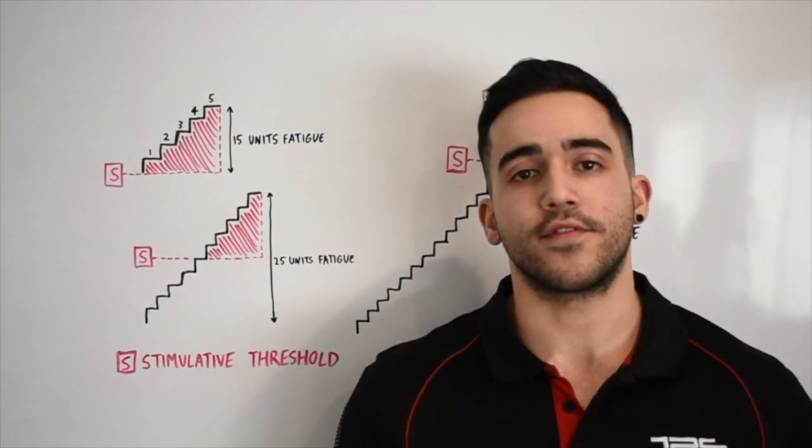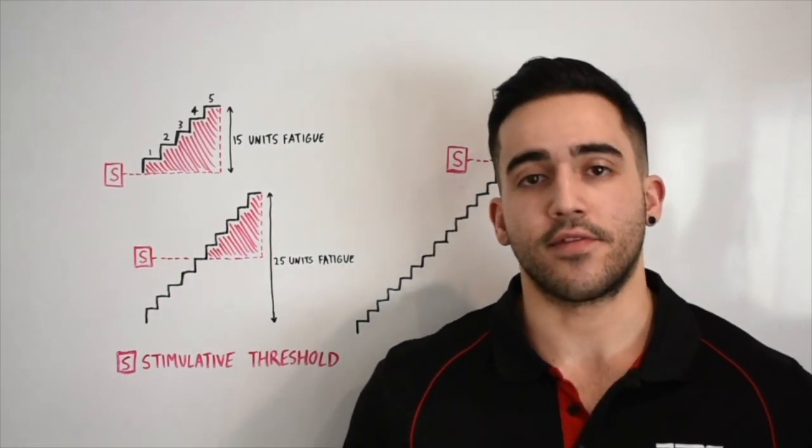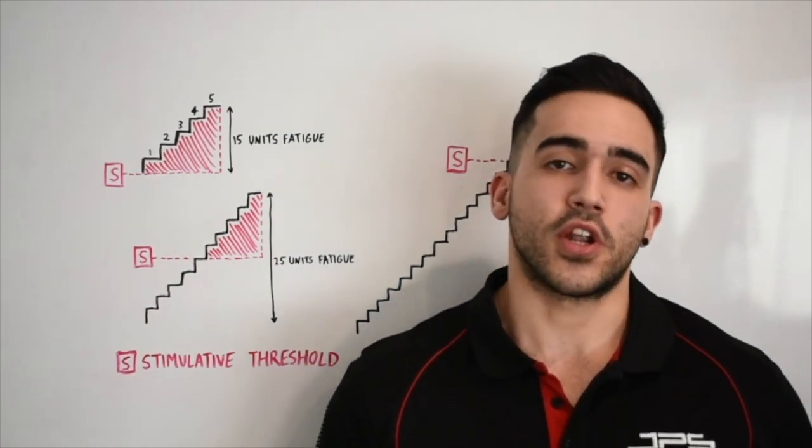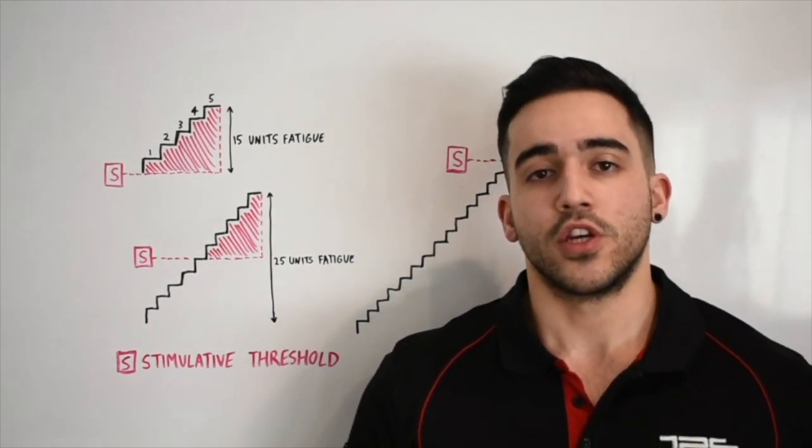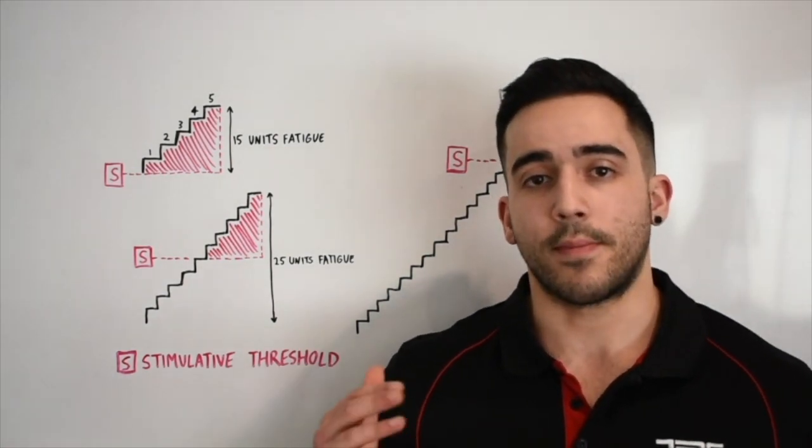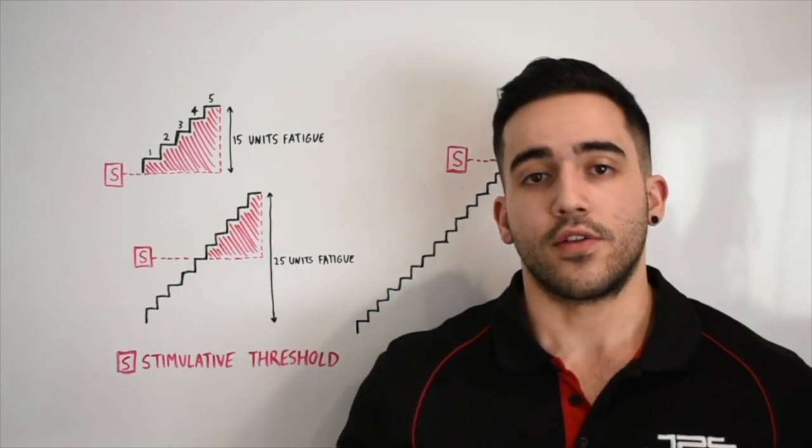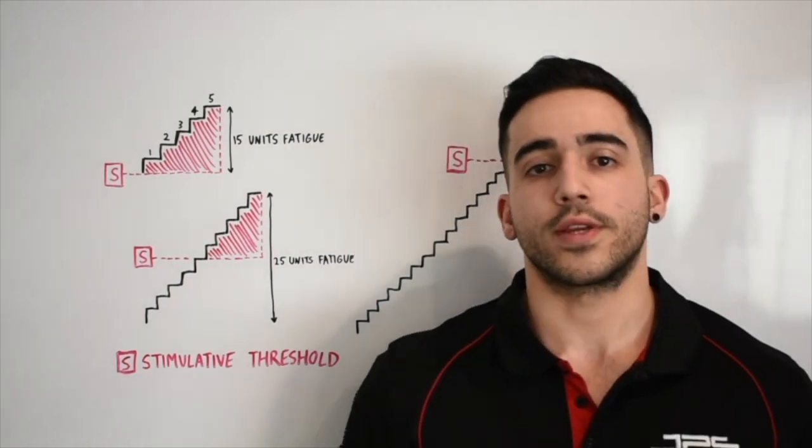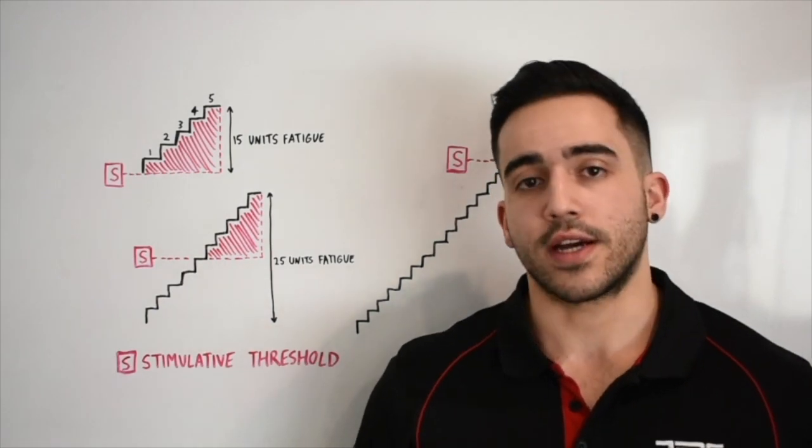So to move on, first we need to understand that hypertrophy can be achieved in all rep ranges as long as there is a sufficient intensity of effort. So as intensity of effort rises throughout a set, so does muscle fiber recruitment and particularly fast twitch fiber recruitment. If we aren't training with sufficient intensity of effort within our sets, then we aren't going to be maximally recruiting our fast twitch fibers. The reason fast twitch fibers are important is because they have a greater potential for growth when compared to slow twitch fibers, and part of the reason is because they contain a greater concentration of the enzyme that signals the nuclei within the muscle cells to synthesize proteins.